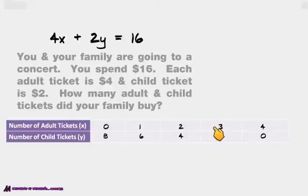Three adult, two kids. Four adult, zero kids. Those are all the different possibilities that we could have of how many different tickets you bought for each different type.